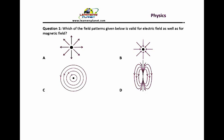This question was very easy. Let's see which of the field patterns given below is valid for electric field as well as for the magnetic field. Now, if you look at option A, you can see that the field pattern is radially outwards.